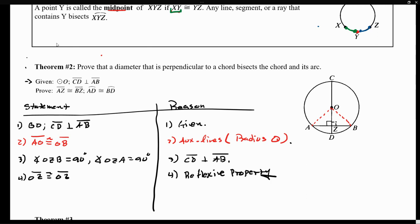We can say that triangle OZA is congruent to triangle OZB because we have two right triangles whose hypotenuses are congruent, and one of the legs is congruent as well. So triangle OZA is congruent to triangle OZB by the HL congruence theorem. We showed those two triangles are right triangles by stating 90-degree angles, and the hypotenuses are congruent since they are radii. With one congruent leg, we can apply the HL congruence theorem.